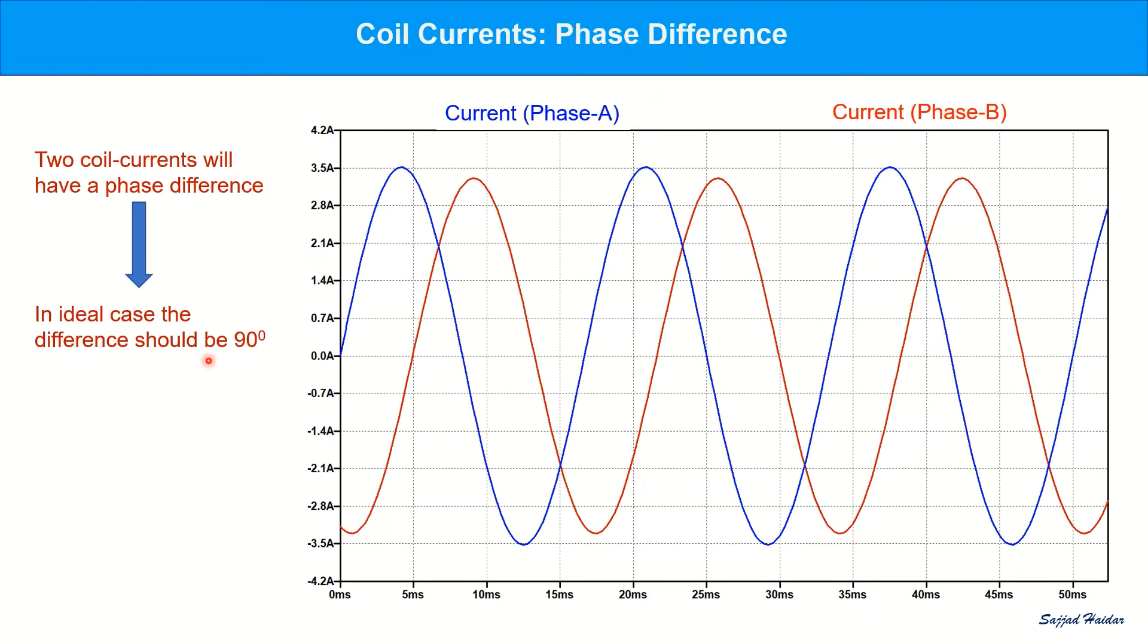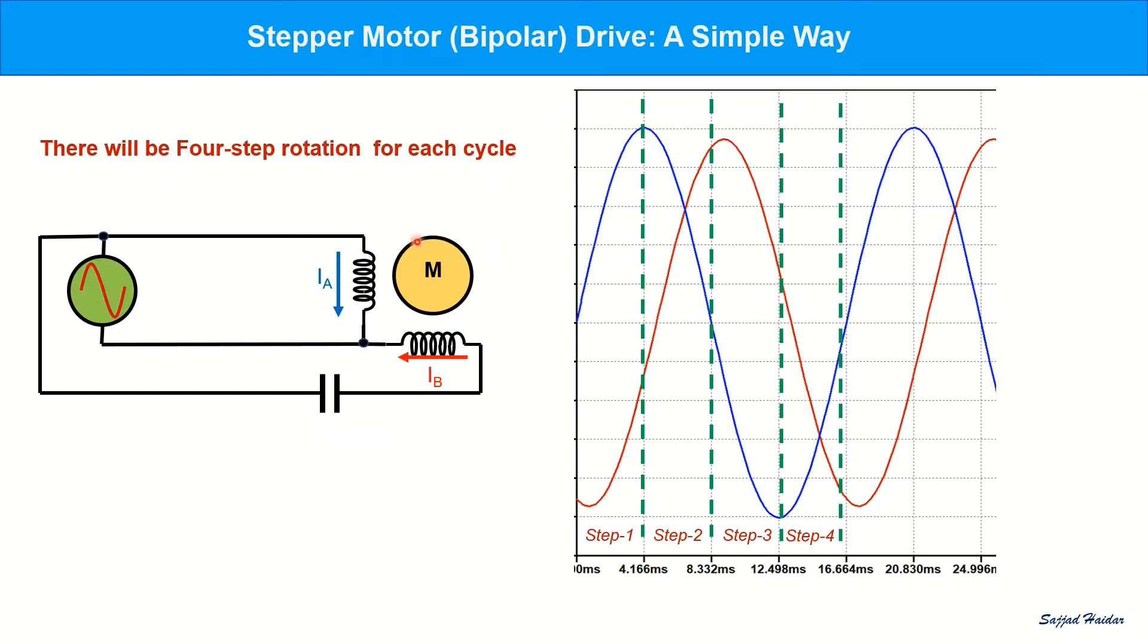In the ideal case, the difference should be 90 degree. But even if the difference is not exactly 90 degree, the motor will spin. In each cycle, motor spins four steps. Step 1, step 2, step 3 and step 4. Each 90 degree means one step.